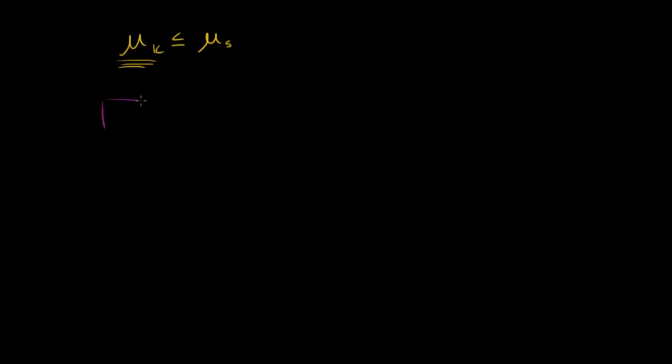So I'll draw the static case over here. I have a block that is stationary on top of some type of surface right over here. And over here, I'm going to have a block moving at a constant velocity relative to some surface, the same surface. So let me draw it out. This is moving at some constant velocity.